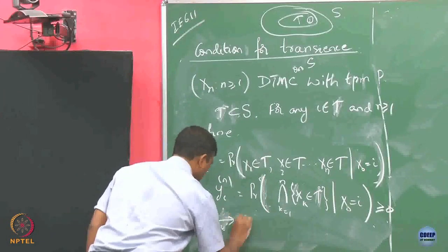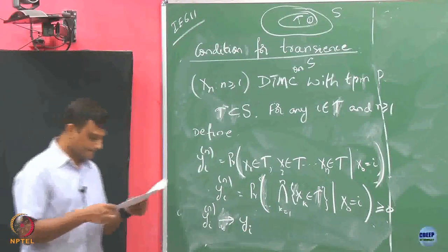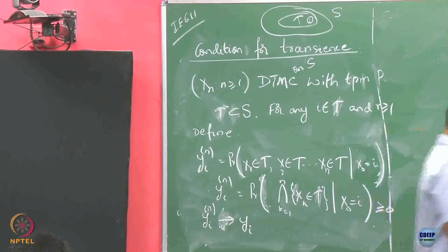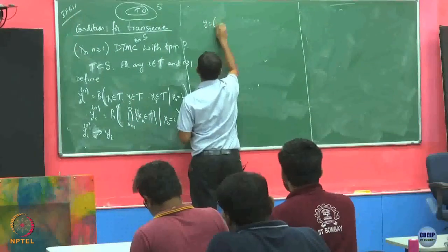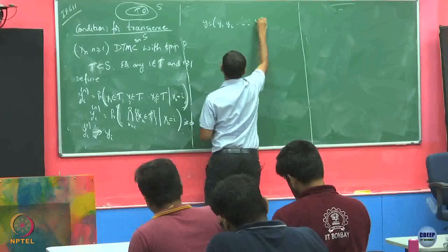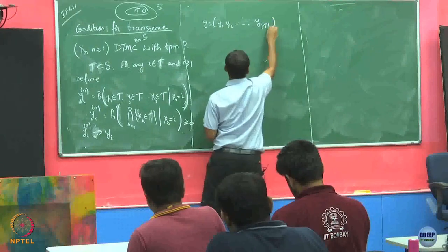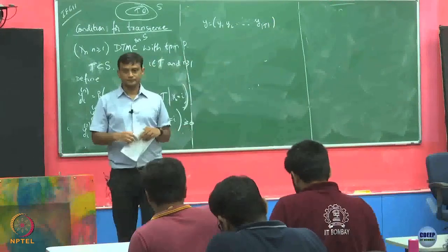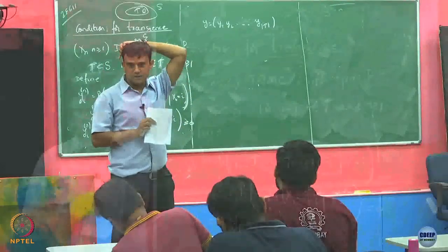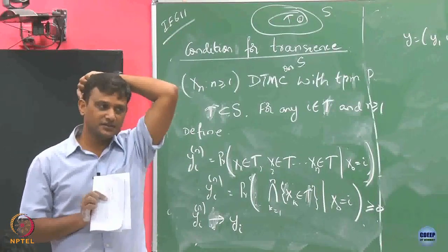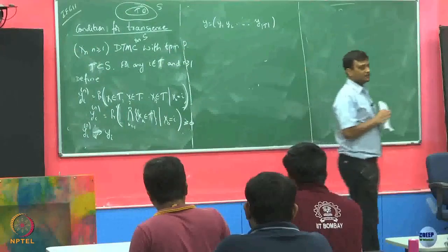Let us say this will converge to some Yi. I am going to denote by the vector Y all these guys: y1, y2, all the way up to y of whatever the number of elements in set T. This T could be potentially infinite — it may have countably infinite elements. In that case, Y is going to be an infinite-dimensional vector.